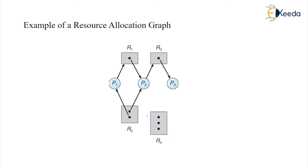Here is an example of a resource allocation graph where four kinds of resources are shown, each with a single instance: R1, R2, R3, and R4. P1 has been allocated one instance of R2 and is requesting one instance of R1. P2 is allocated one instance of R2 and requesting one instance of R1. P2 is also requesting one instance of R3. P2 has been allocated one instance of R1 and R2 and is looking for one instance of R3.